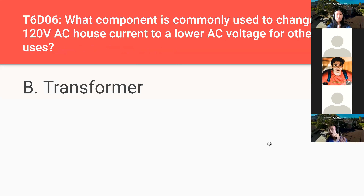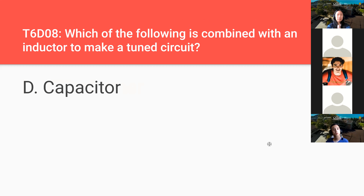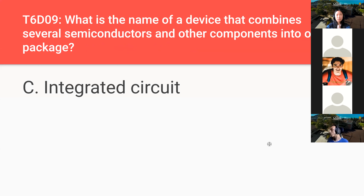Which component is commonly used to change 120-volt AC house current to a lower AC voltage? A transformer. Which of the following is commonly used as a visual indicator? An LED, or light emitting diode. Which of the following is combined with an inductor to make a tuned circuit? A capacitor. What is the name of a device that combines several semiconductors and other components into one package? An integrated circuit.